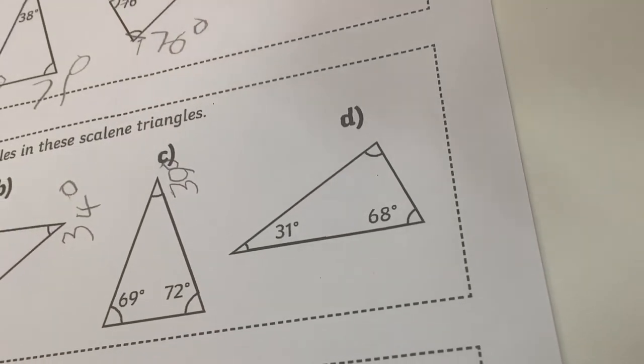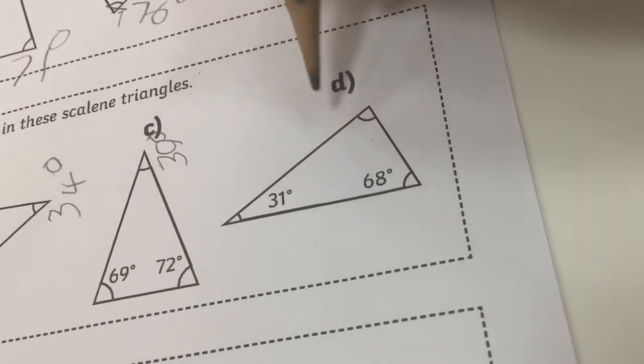And here, 31 plus 68, that is 99. I'm going to put 81.